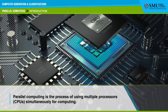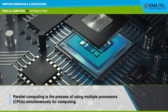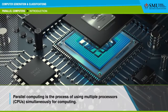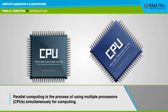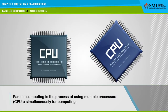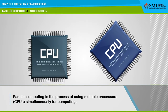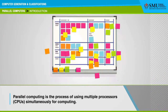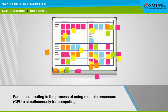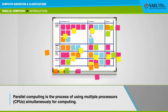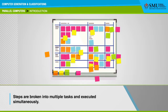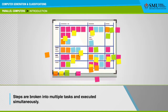Parallel computing is the process of using multiple processors or CPUs simultaneously for computing. In traditional programming, a single processor executes the program instructions in a step-by-step manner. Some operations have many steps which are not interdependent. Therefore, they are broken up into multiple tasks to be executed simultaneously.